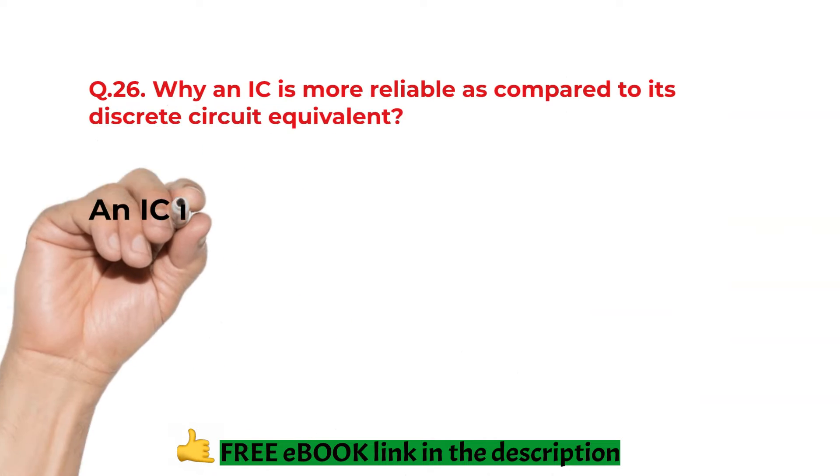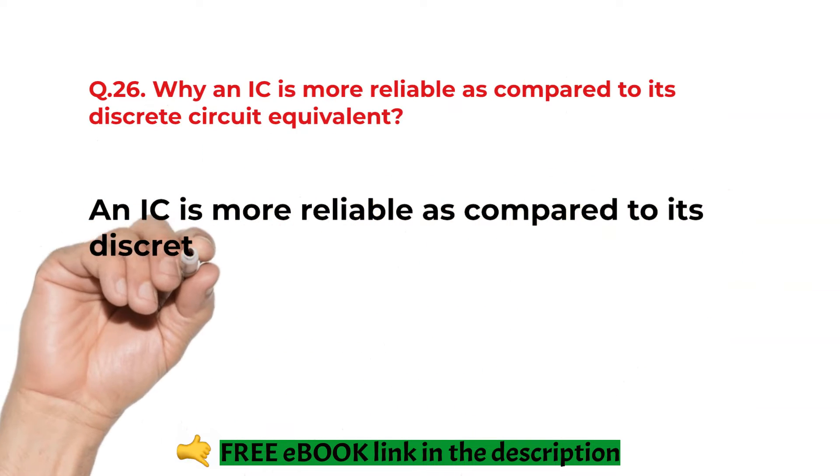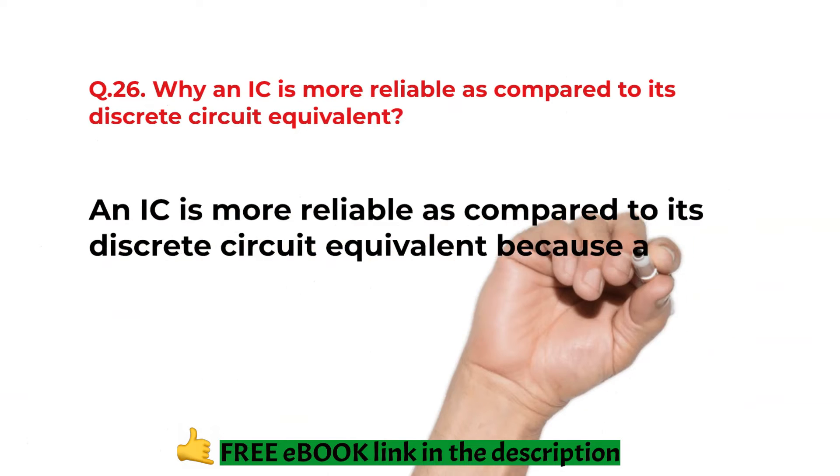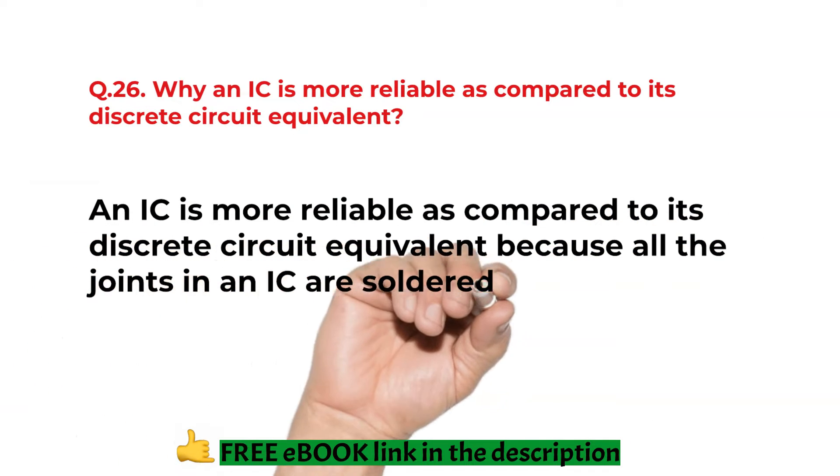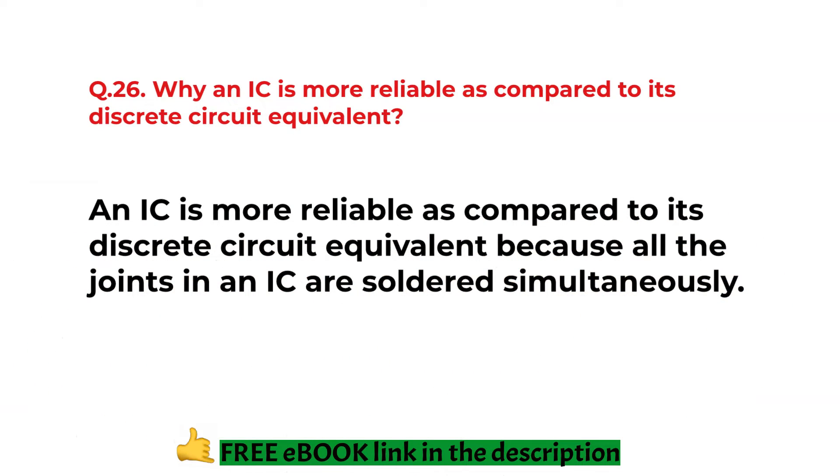Why an IC is more reliable as compared to its discrete circuit equivalent? An IC is more reliable compared to discrete because all the joints in an IC are soldered simultaneously.